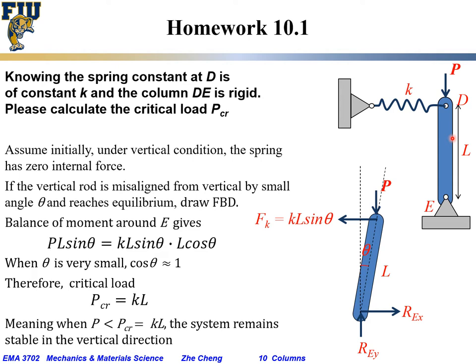We have the column going down with a downward force P. Under idealized conditions, if P is ideally vertically aligned, then DE will not rotate left or right. But in reality, due to disturbances from minor vibrations and other things, it may lose stability if the vertical load P is greater than certain values. To solve this, we use the same approach, considering it rotates away slightly.